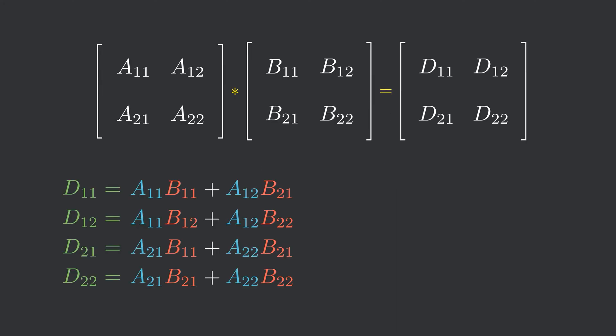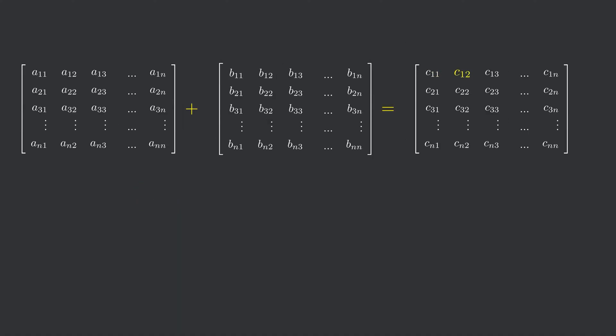And n-square represents the non-recursive work done at each level, that is, the summation of the matrices. Keep one thing in mind, they are not normal integer summations. They are matrix summations, which means for every element in the resultant matrix, there would be a summation. And since there are total n-square elements, there would be total n-square summations.